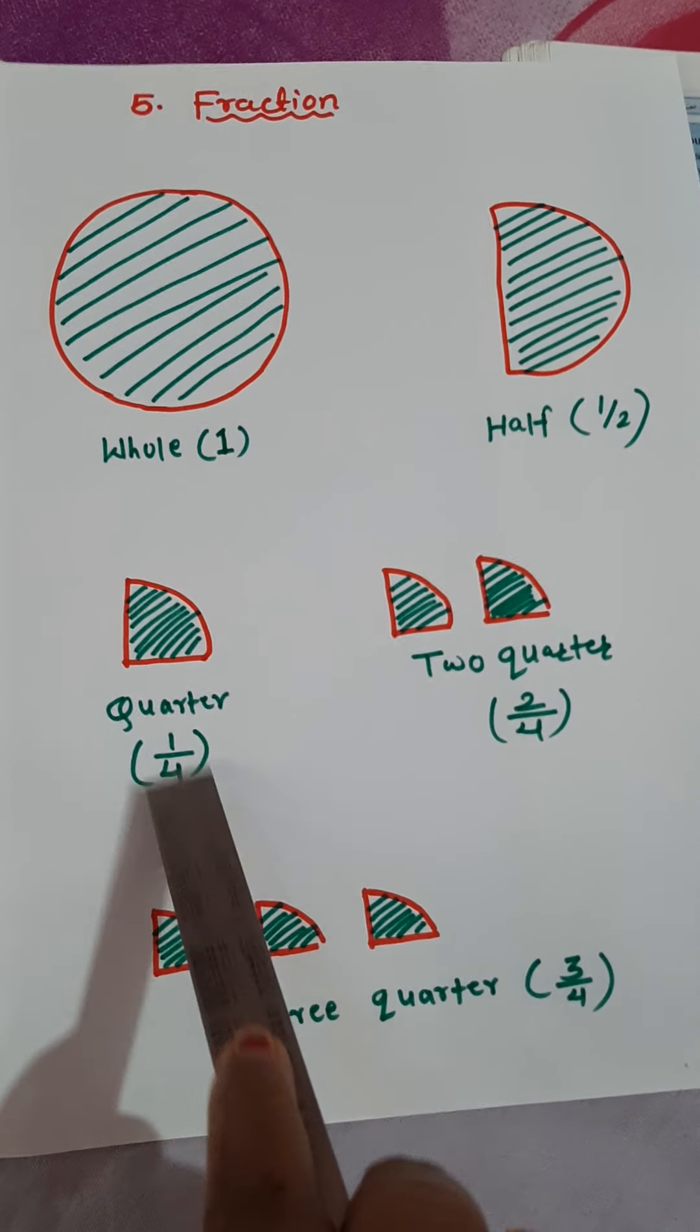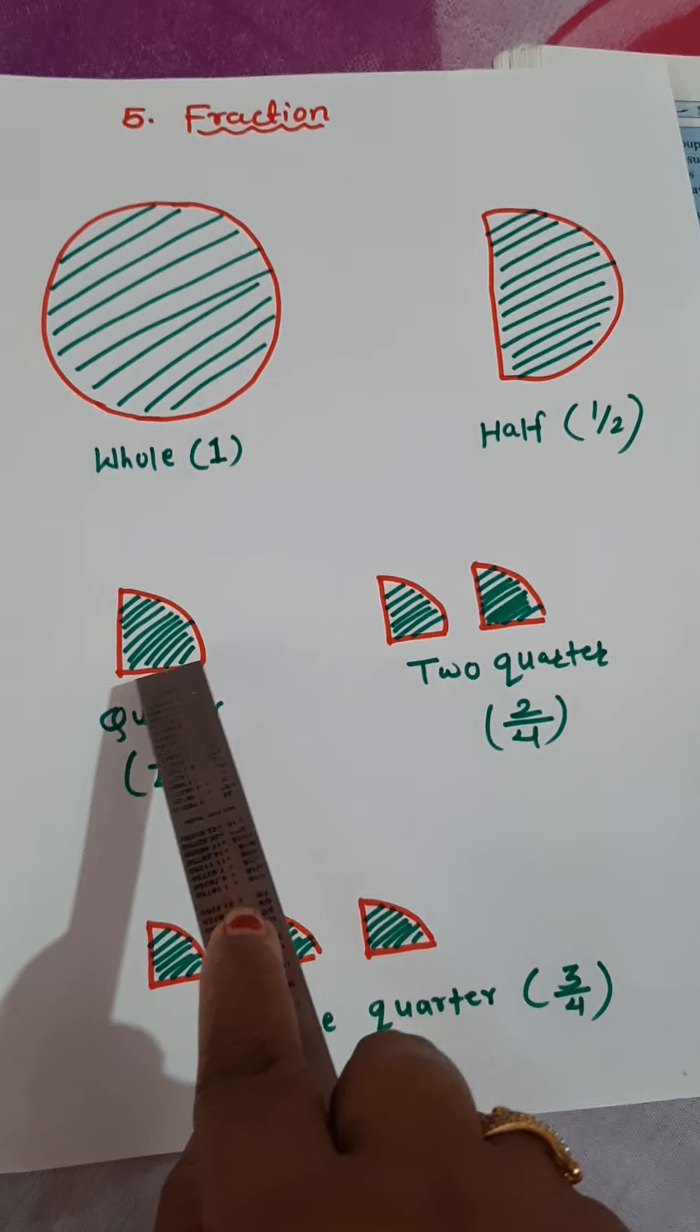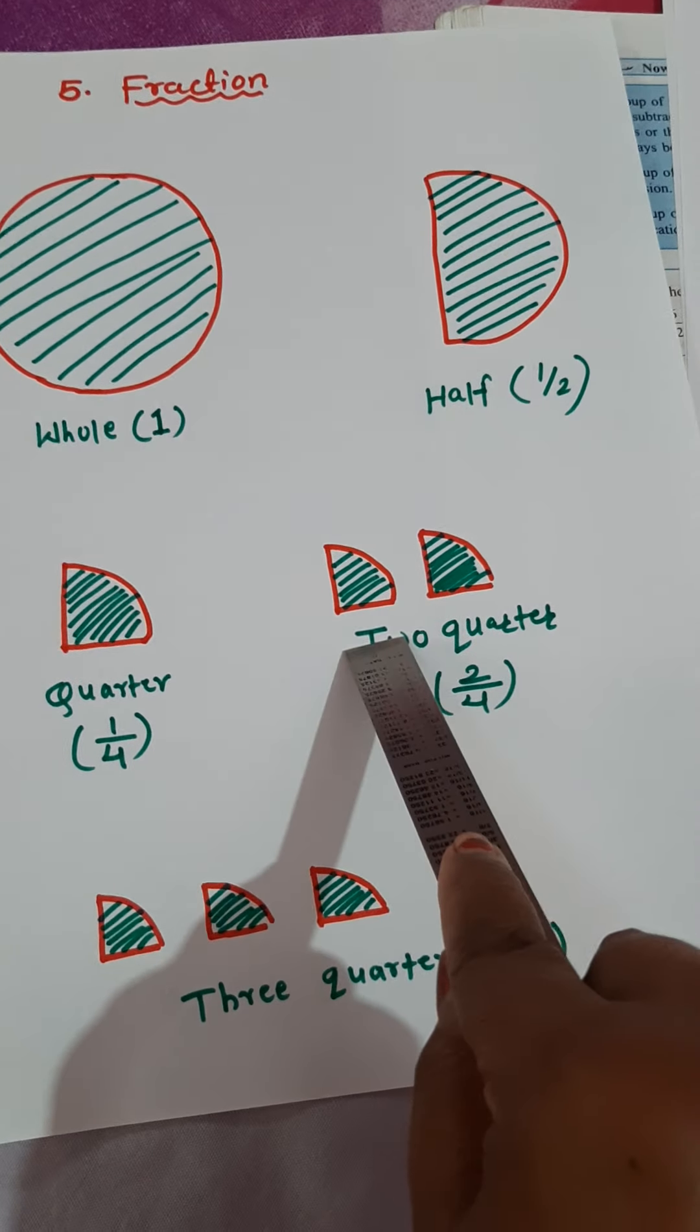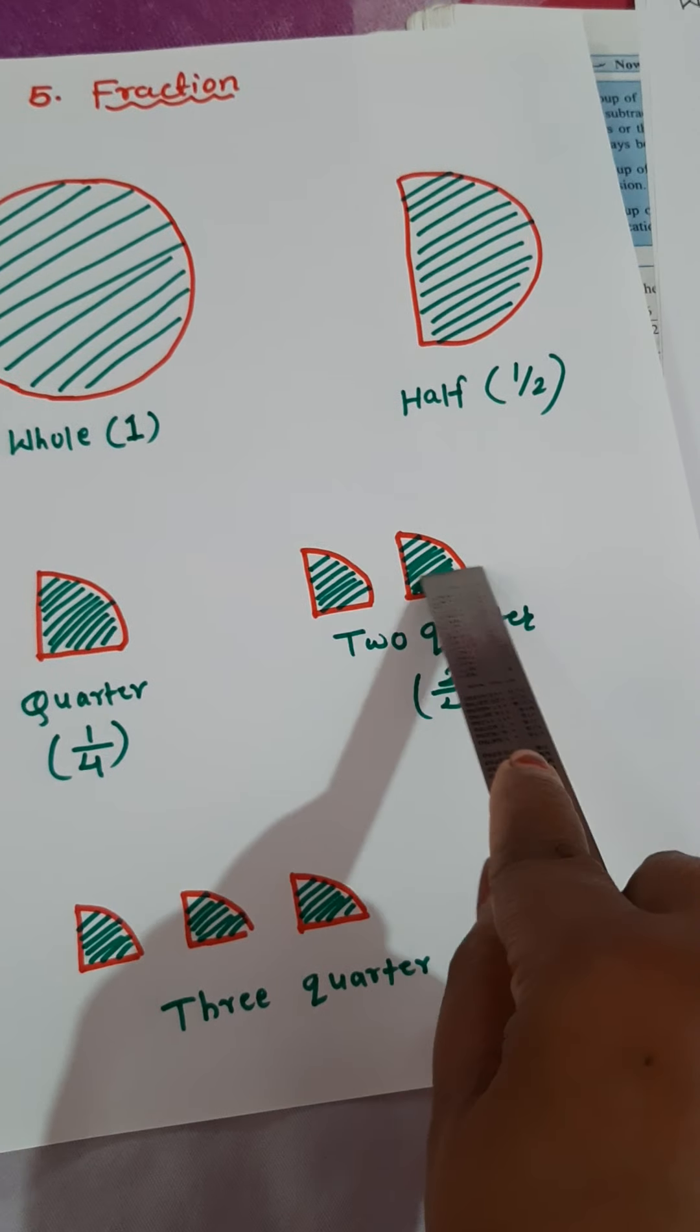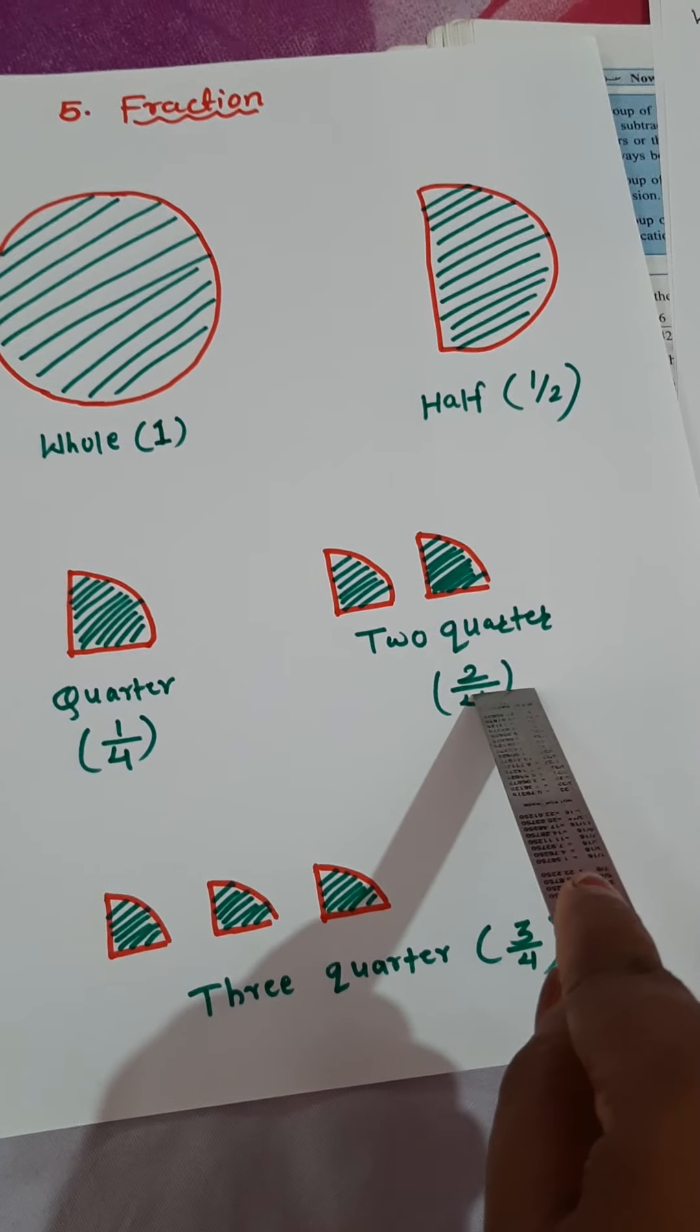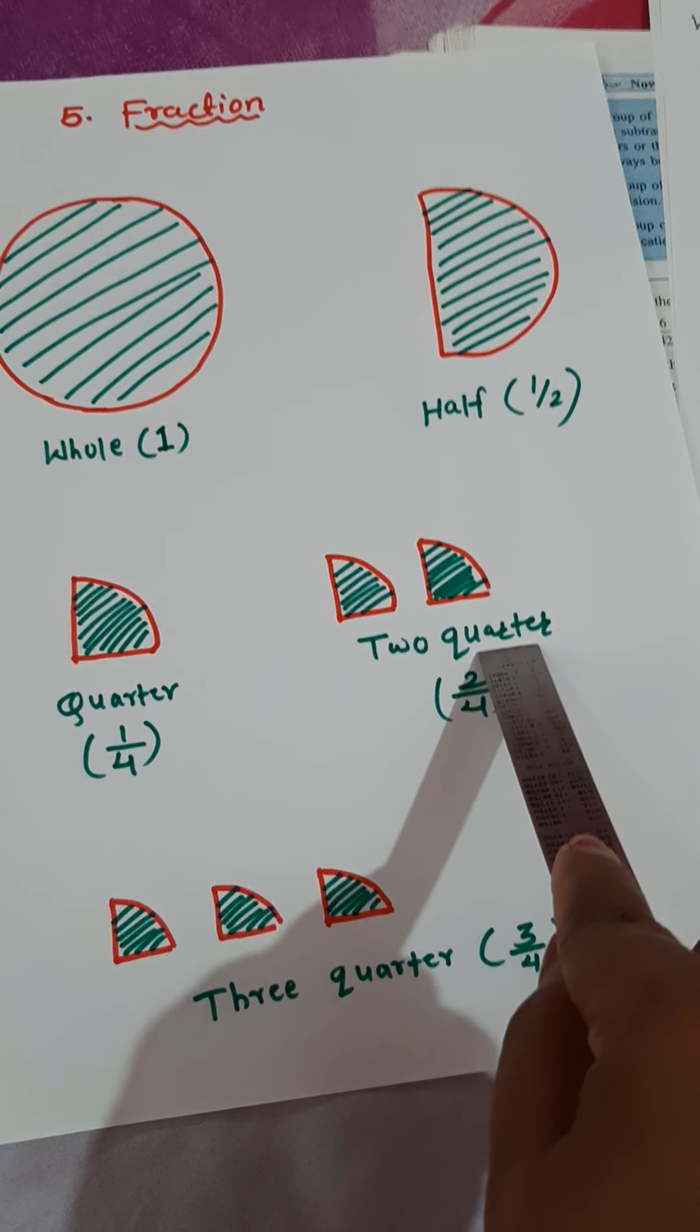1 upon 4 means quarter. If out of 4 equal parts, I take 2 parts. That is called 2 quarters. This figure shows 2 quarters. 2 upon 4. Total parts 4 and taken parts 2.